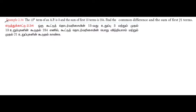Find the common difference and sum of 21 terms. So we take t13 equals 3, and the sum of the first 13 terms, S13, equals 234.